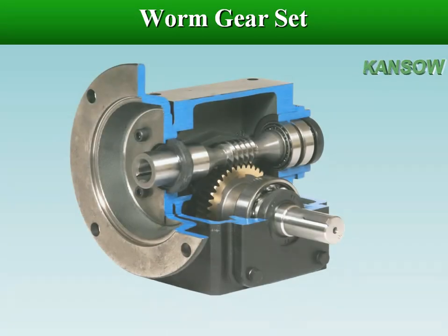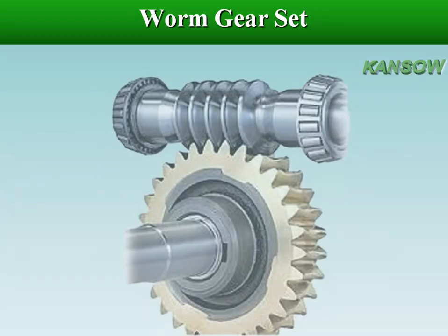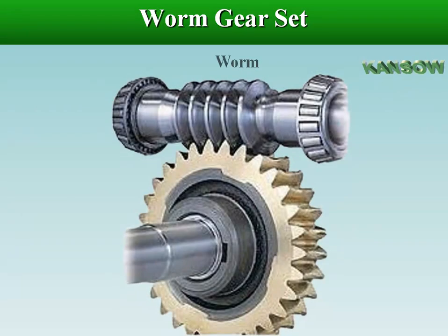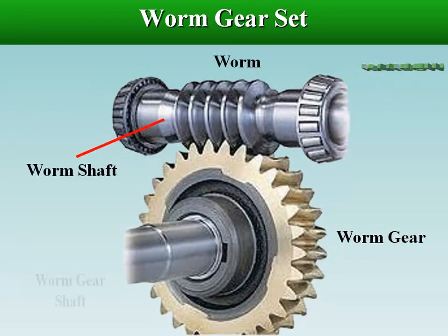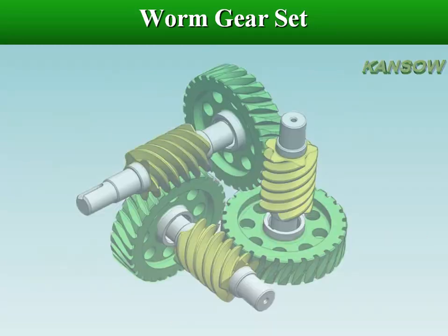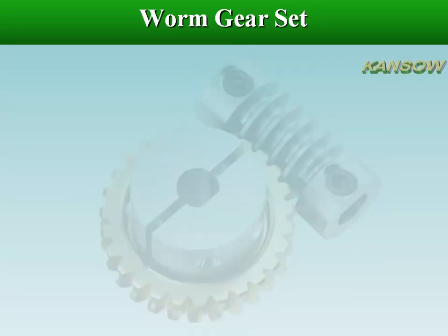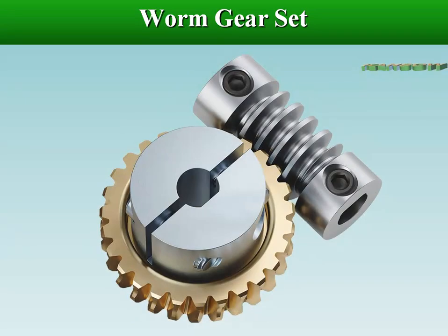Worm gears are widely used for transmitting power at high velocity ratios between non-intersecting shafts that are generally, but not necessarily, at right angles. It can give velocity ratios as high as 300 to 1 or more in a single step in a minimum of space, but it has a lower efficiency.